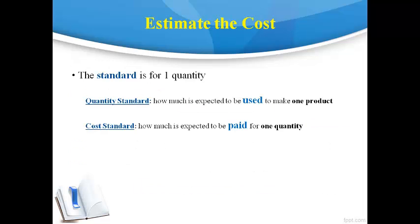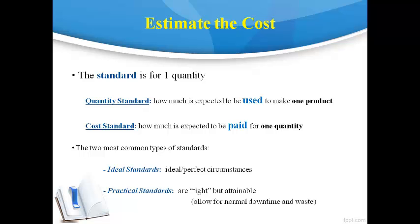The word 'standard' means the same as an estimate. The cost sheet is prepared at the beginning of the period. It is an estimated cost since production has not yet occurred during the year and actual costs are not yet known. Each type of product cost requires an estimated quantity and an estimated cost for each quantity. The two most common types of standards are ideal and practical. Ideal standards estimate quantity and cost under perfect circumstances without considering human error. Practical standards recognize that human error occurs and allow for these inefficiencies. Cost sheets are generally prepared based on practical standards.